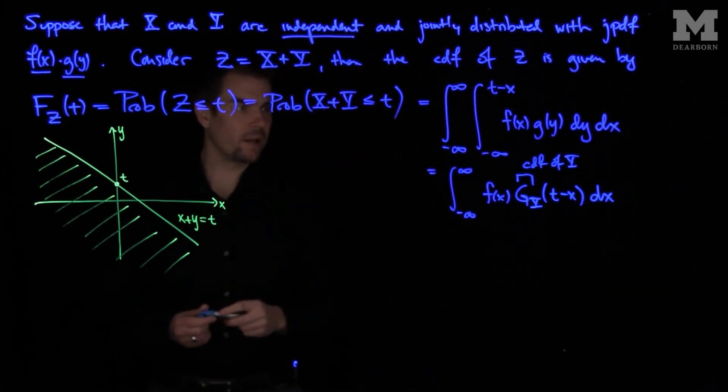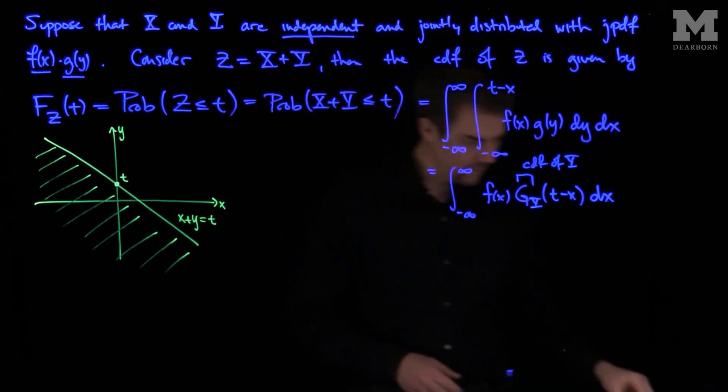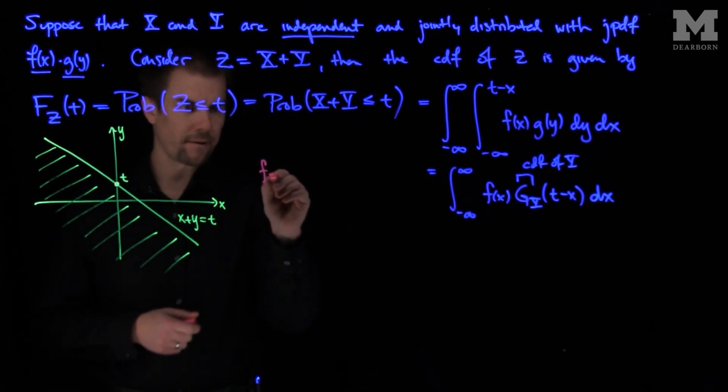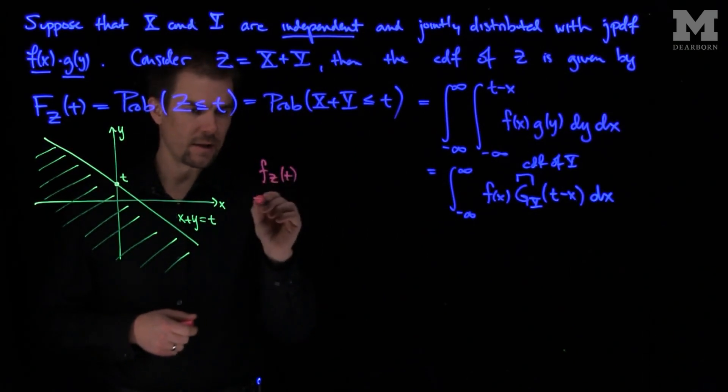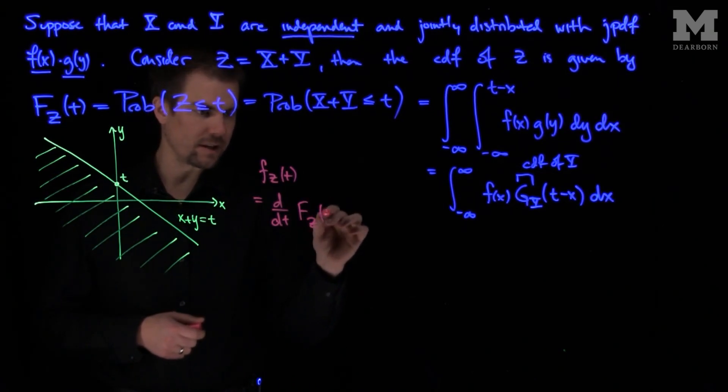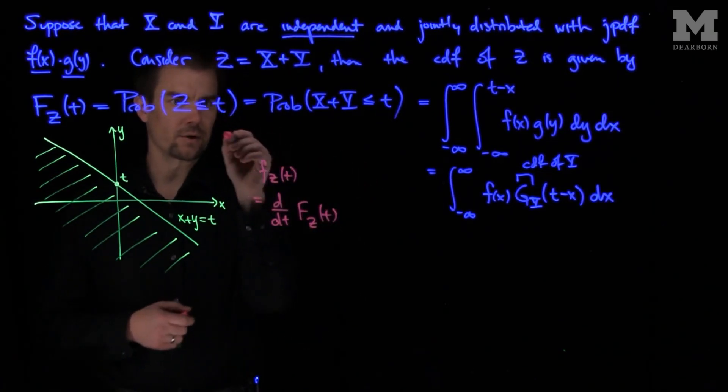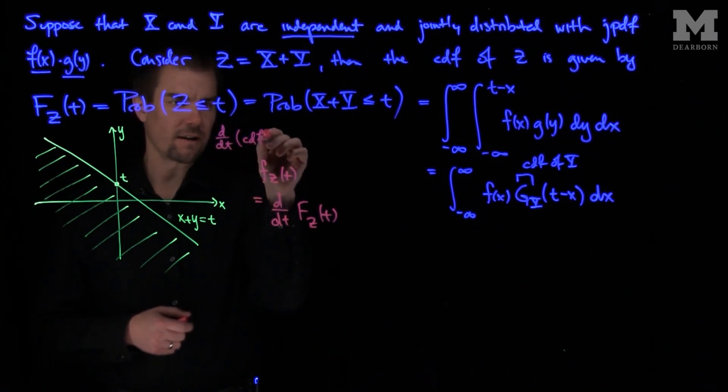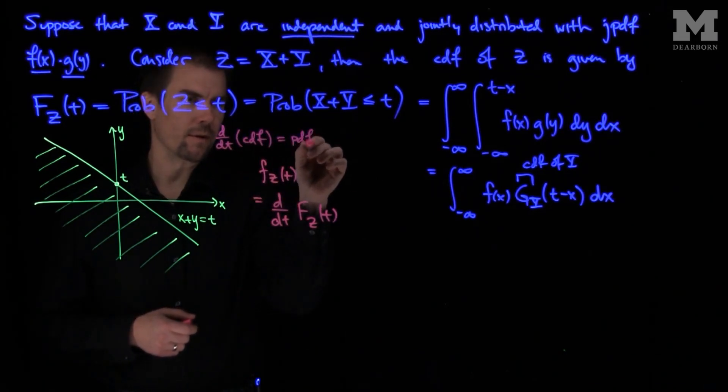And so now if we want to find the pdf, we can differentiate this formula. So f sub Z of t is d by dt of F capital Z of t. Remember that the derivative with respect to t of the CDF is equal to the pdf. So the derivative of the CDF is always the pdf.